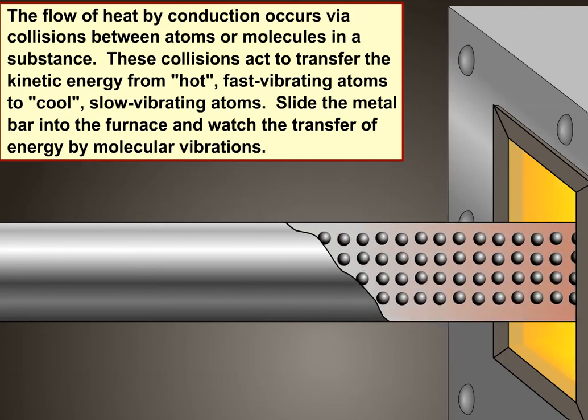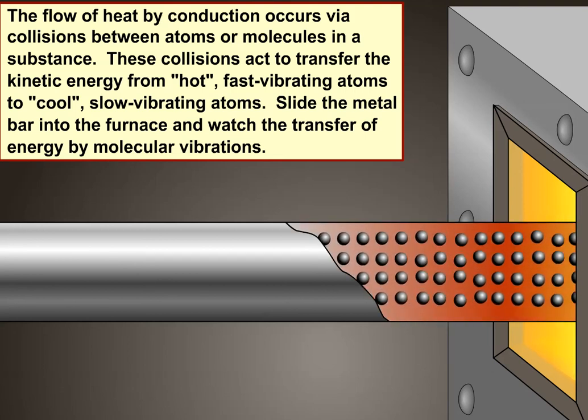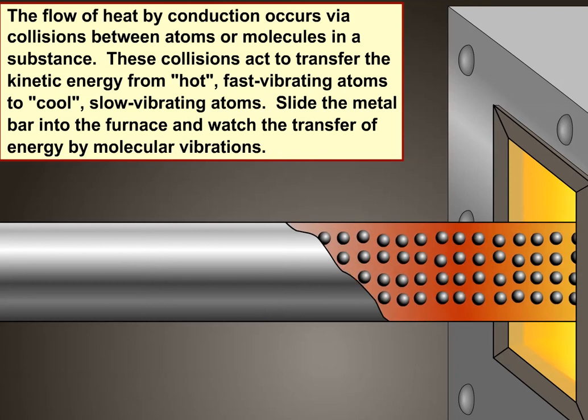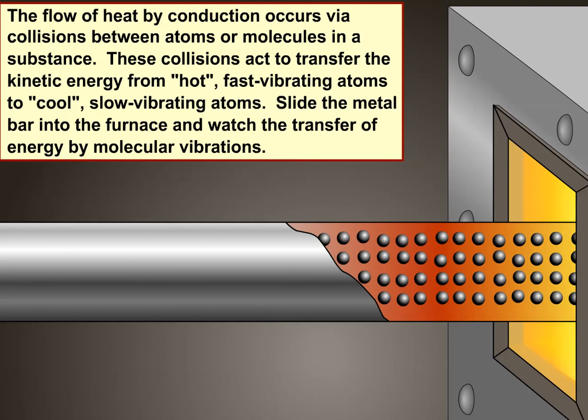Notice that as the metal heats up, the atoms at the end of the rod begin to vibrate faster. The faster vibrating atoms transfer some of their energy to the slower adjacent atoms. Thus the slower atoms also vibrate faster, giving them a higher temperature. This is conduction.